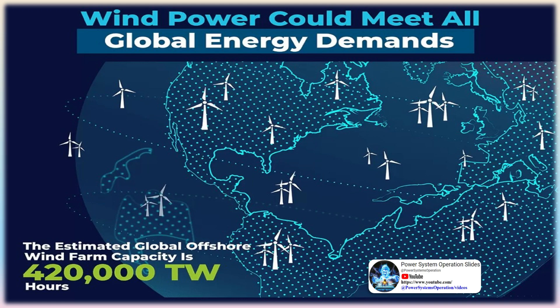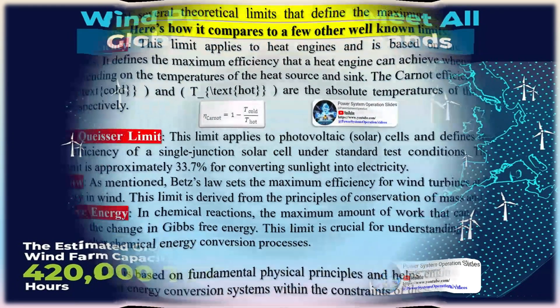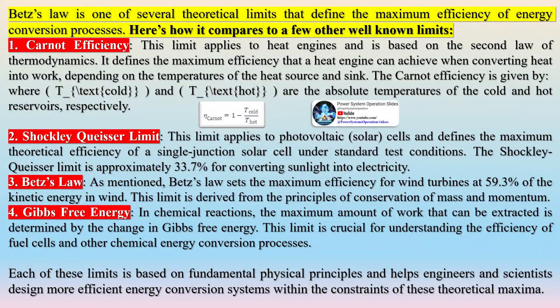Betz's law sets the maximum efficiency for wind turbines at 59.3% of the kinetic energy in wind, derived from conservation of mass and momentum. For chemical reactions, Gibbs free energy determines the maximum work extractable, which is crucial for understanding fuel cells and other chemical energy conversion processes. Each of these limits is based on fundamental physical principles and helps engineers and scientists design more efficient energy conversion systems.